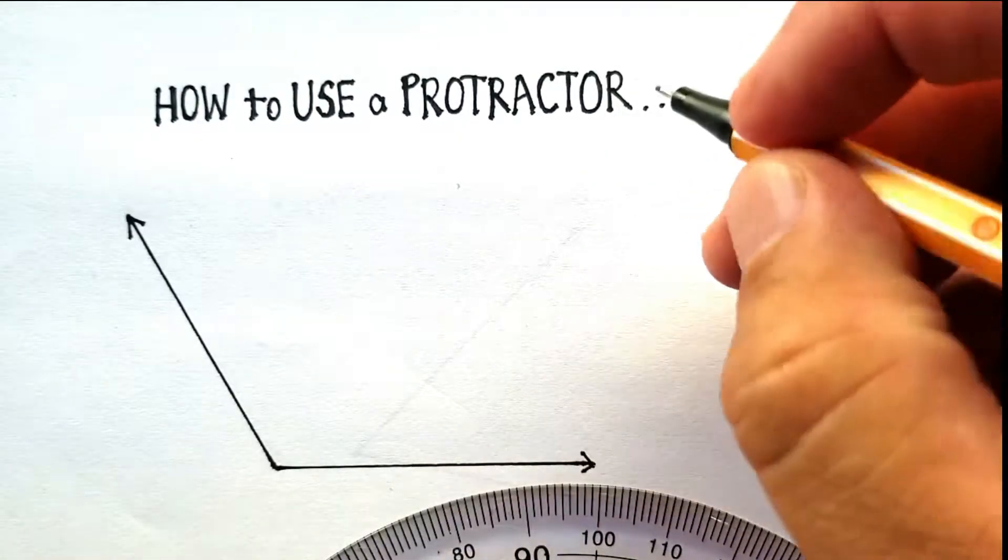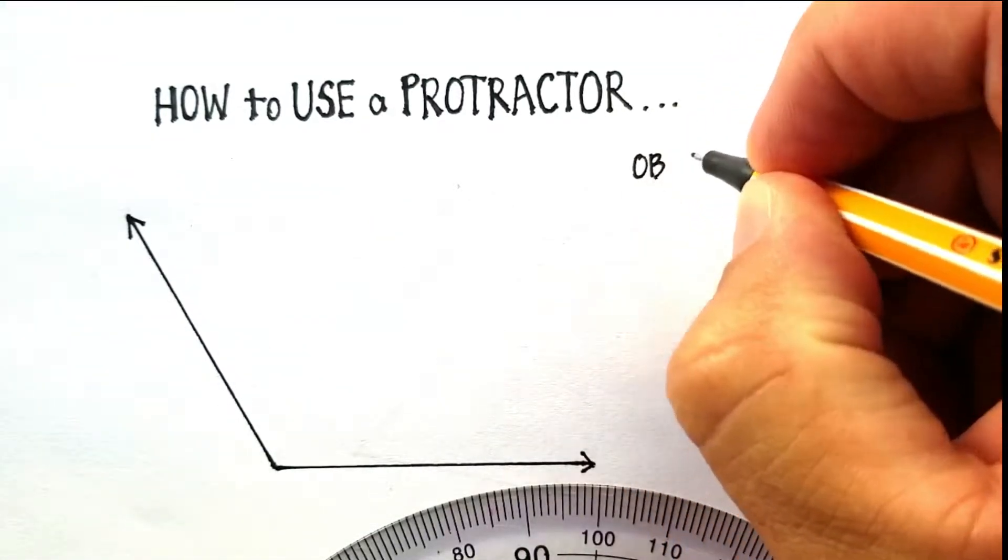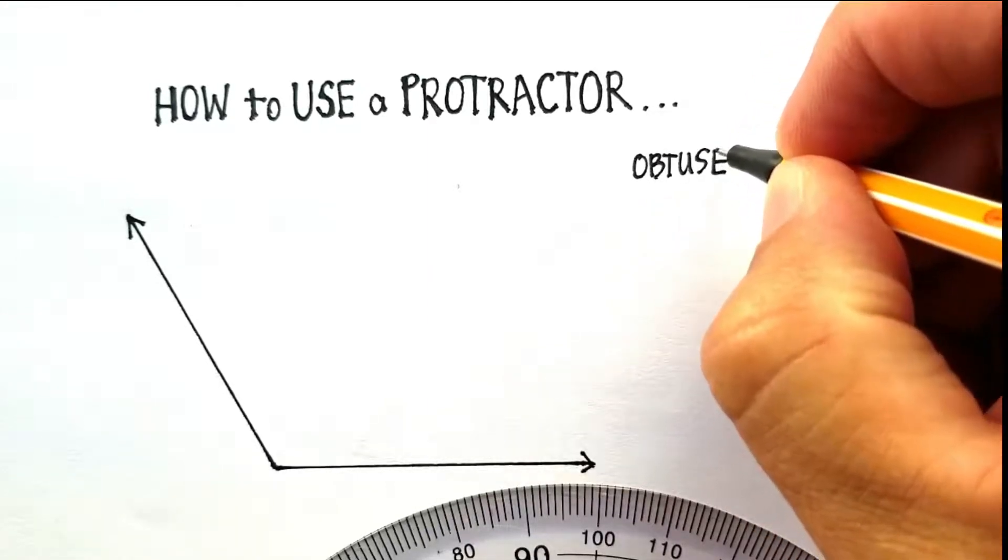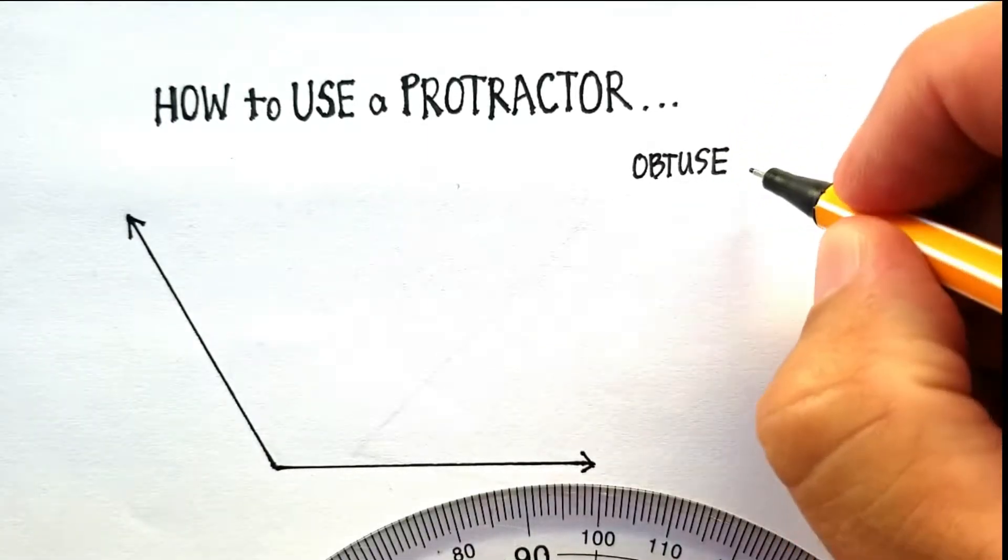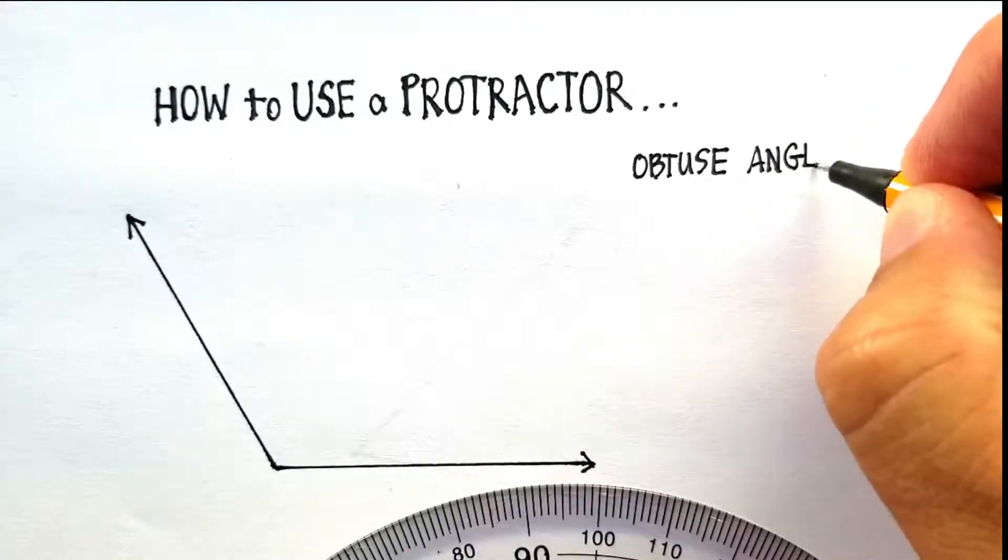Now, I'm going to measure two types of angles. The first type of angle I'm going to measure is what I call an obtuse angle. Remember, obtuse angle basically means that the angle is greater than 90 degrees.